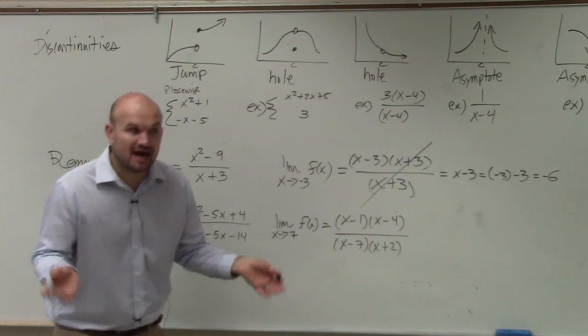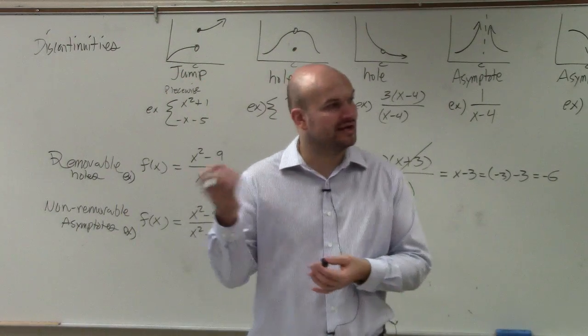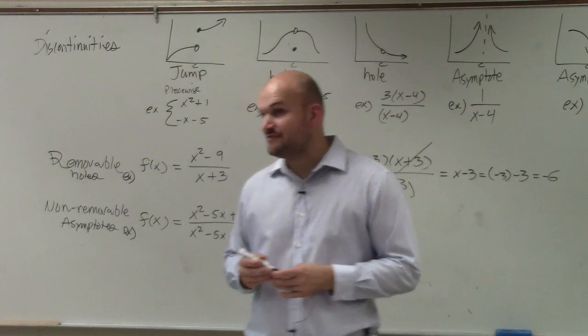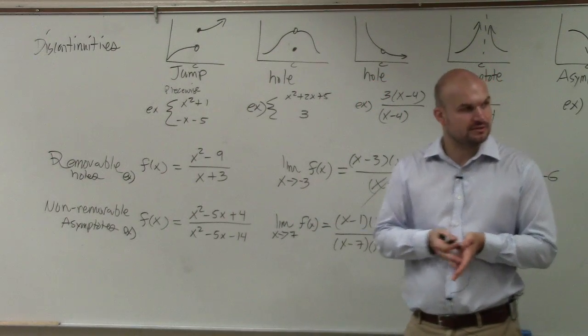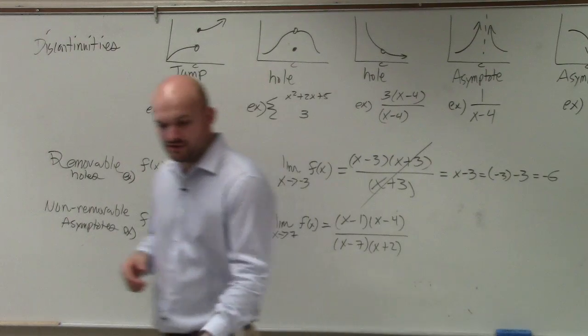So if you can factor it out, it's removable, and it creates a hole. If it cannot be factored out, it's going to create an asymptote, where the graph is going to approach it. Anybody have any further questions on that?